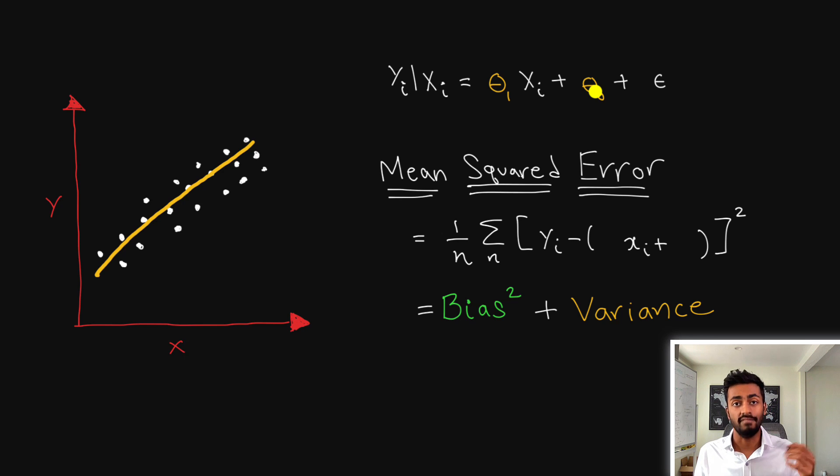And we would evaluate this or train this model using the mean squared error. And the mean squared error is the difference between the actual value and the predicted value which is going to be essentially just the equation of this line.